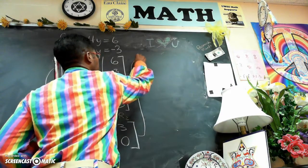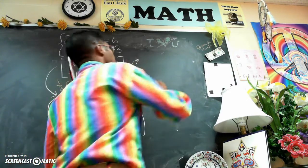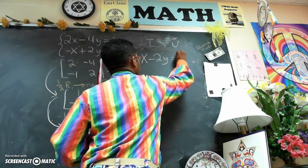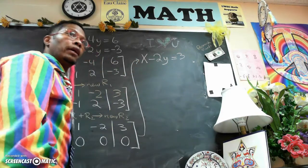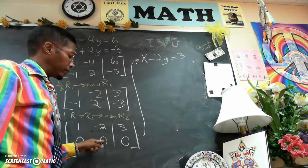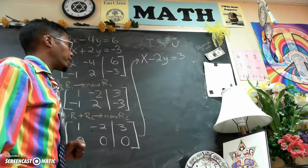So now the solution of the system is as follows. We have x minus 2y equals 3. And this line is just 0x plus 0y equals 0. So we don't need to write that.